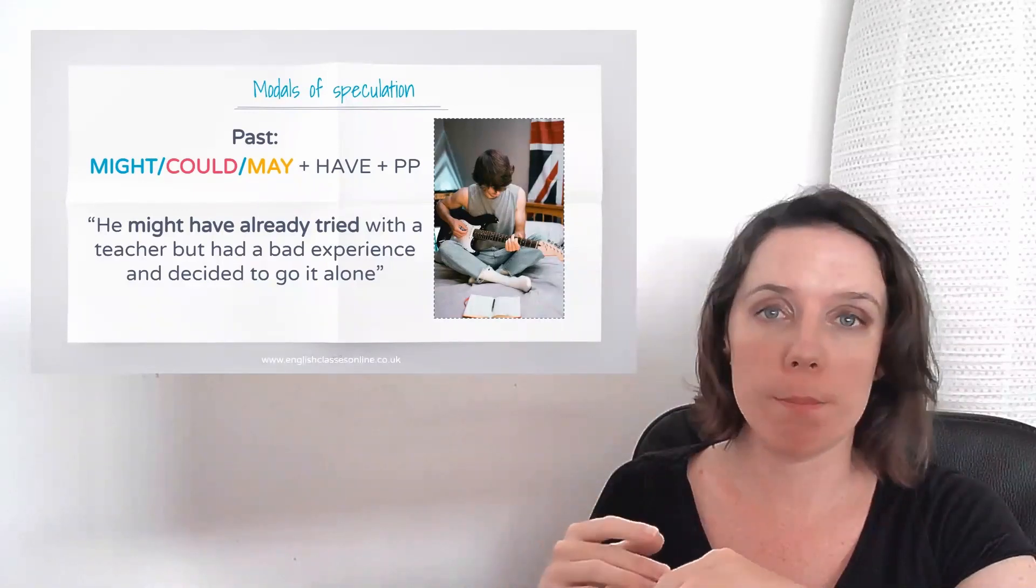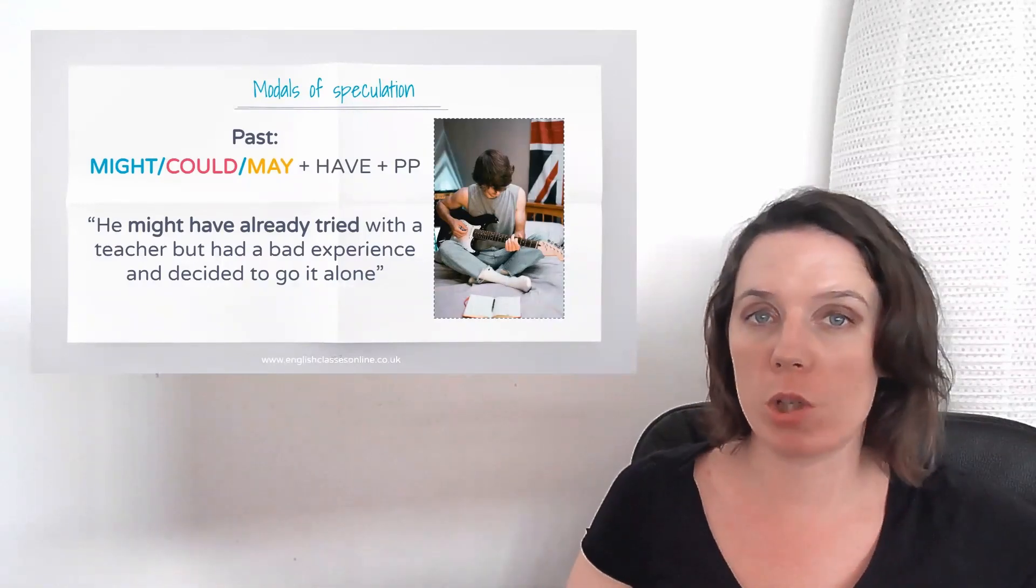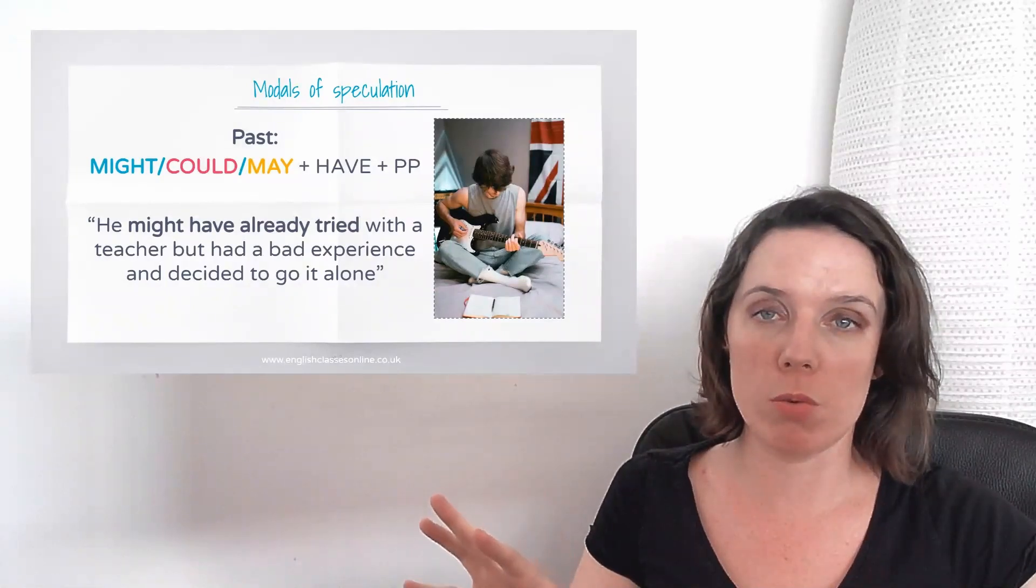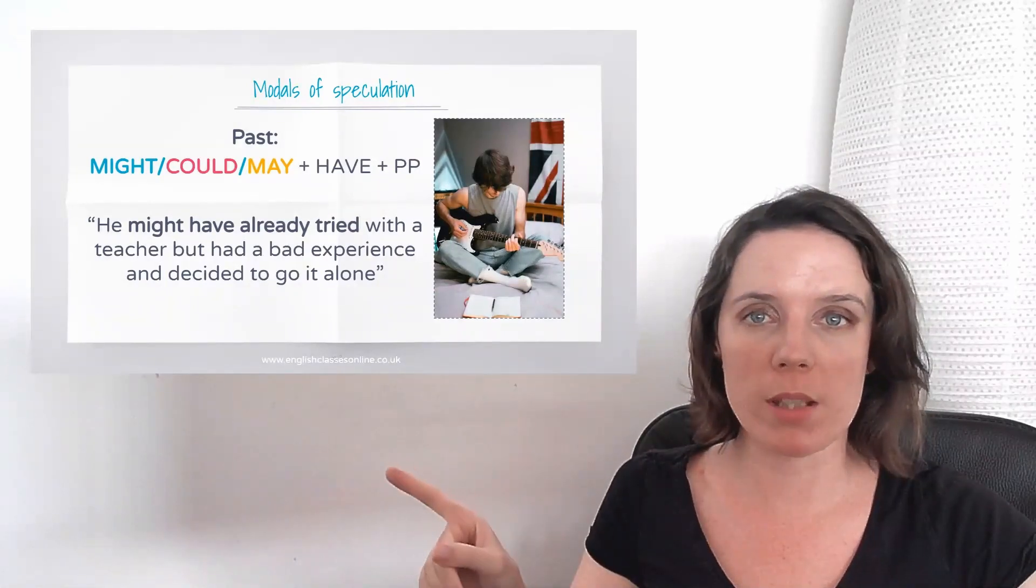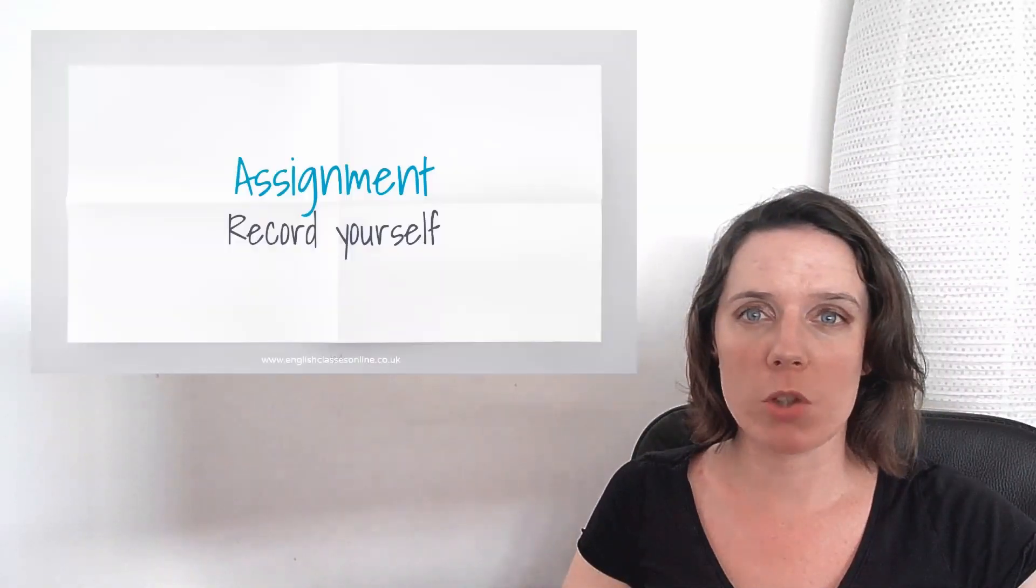Might, could, may be and a verb an ing for present, or must be and a verb an ing for present. So they're the two main grammar points that you need to use in speaking part two, comparatives and modals of speculation. So we're pretty much done for speaking part two now.